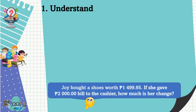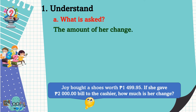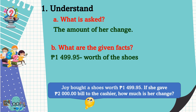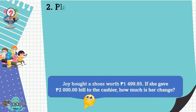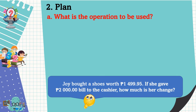First, we need to understand the problem — we should know what is asked. The problem is asking for the amount of her change. Next, what are the given facts? The given facts are 1,499 pesos and 95 centavos, which is the cost of the shoes, and the 2,000 peso bill she gave to the cashier.